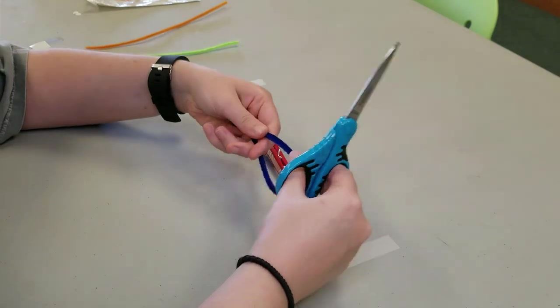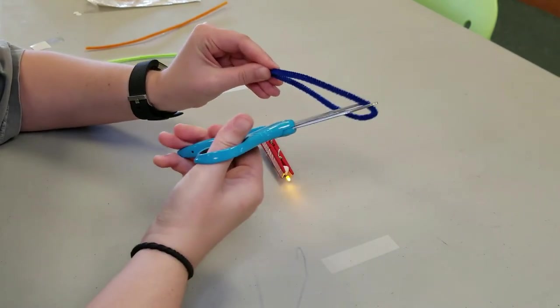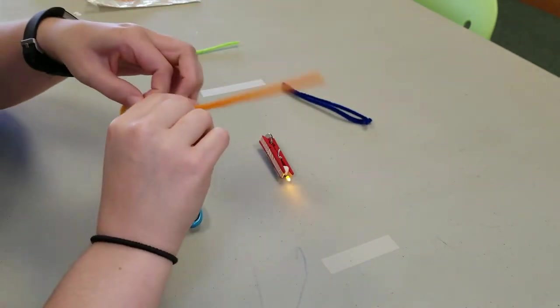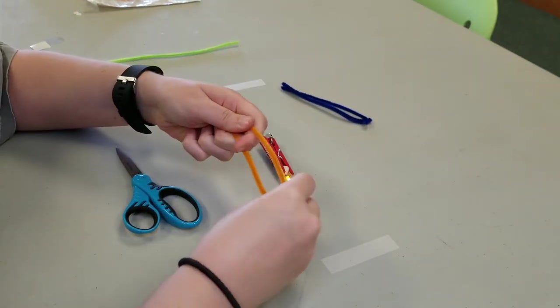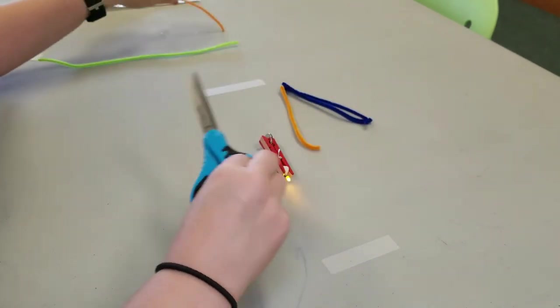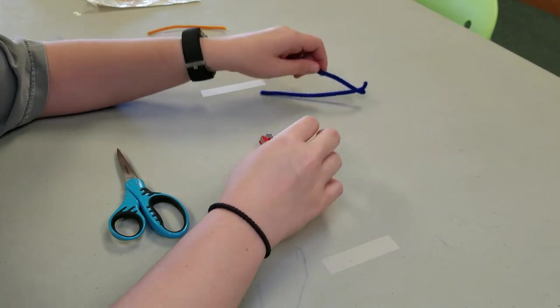Now we're going to decorate our circuit bugs. This is just an example of how you can use the pipe cleaners to decorate it. You can decorate yours any way you want, but what we'll do is cut our pipe cleaners in half to make the legs.